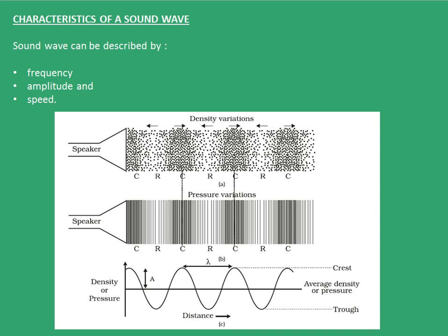Hello guys. In the previous video we had seen that sound can be considered a wave. Now let us see some characteristics of a sound wave. A sound wave can be described by its frequency, its amplitude and speed. One by one we will see what is frequency of a sound wave, what is amplitude of a sound wave and what is speed of a sound wave.